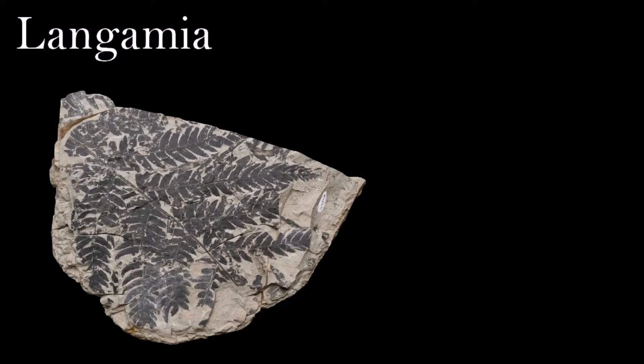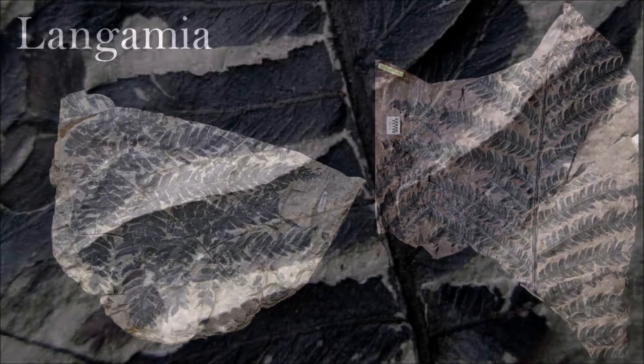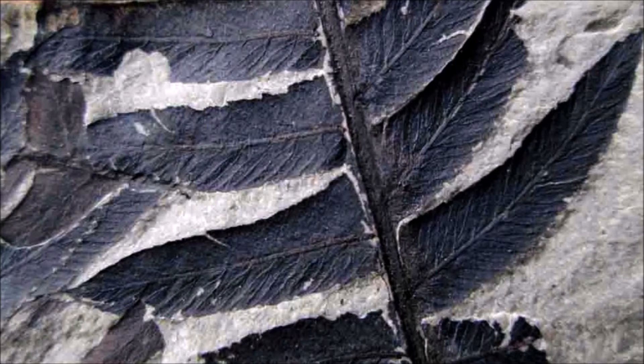This fern is similar to Cladophlebis from the Jurassic. The segments of the frond, called pinnules, are about 1 cm long with rounded tips. These pinnules have a primary vein that runs to their tips, as well as veins oriented sideways that form a distinct network. This type of net venation is also characteristic of the primitive seed plant Lonchopteris, which lived during the Carboniferous and Permian.